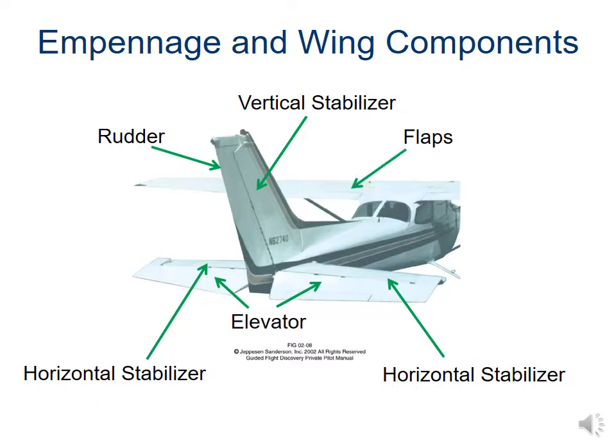Looking at the wings, you'll see the flaps on the inside and the ailerons on the outside. Flaps are closest to the fuselage while ailerons are on the outside. Flaps can be full span of the wings and so can ailerons, but on this example they're separated. The flaps are deployed downward to help with lift or modify drag.